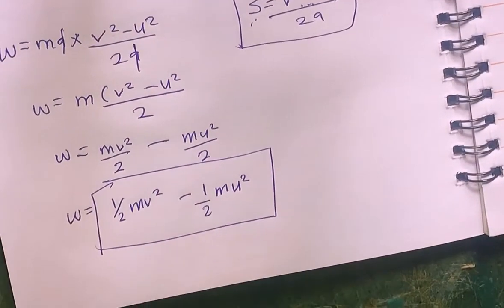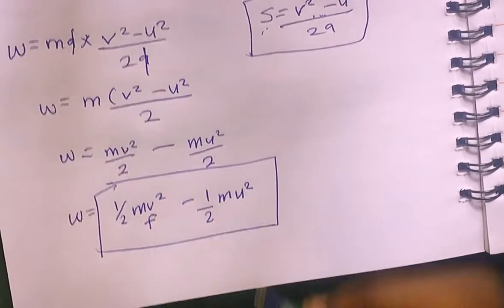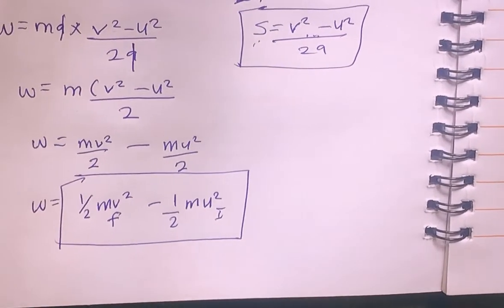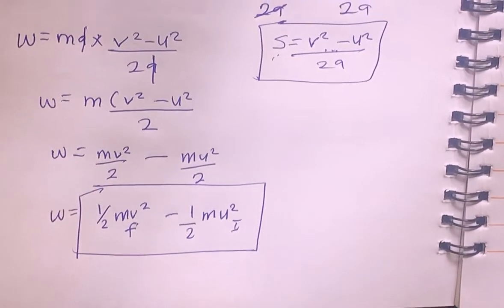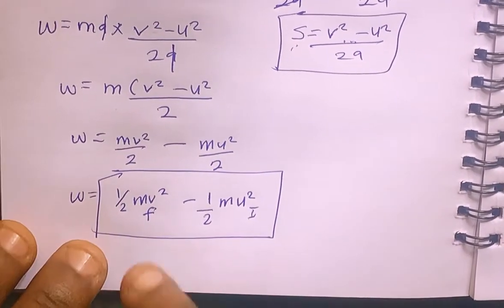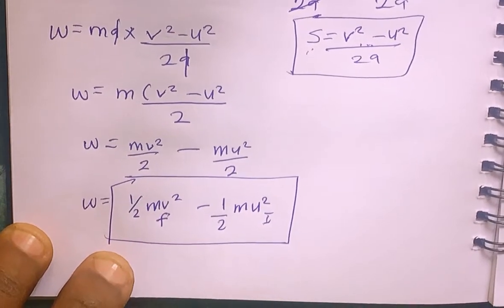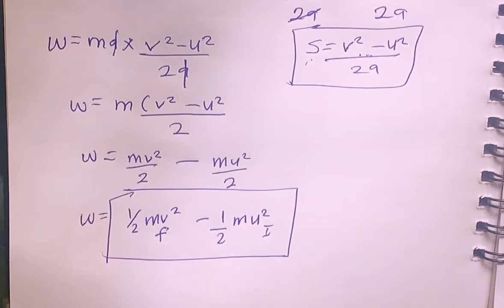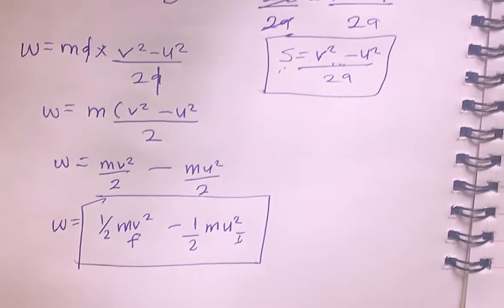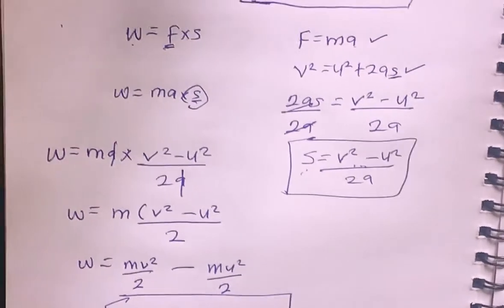So we arrive at the formula. The term ½mv² is our final kinetic energy and ½mu² is our initial kinetic energy. We can see that work done equals change in kinetic energy of a moving body — the total work done is equal to the change in kinetic energy. I'm also going to show another proof using the calculus method.